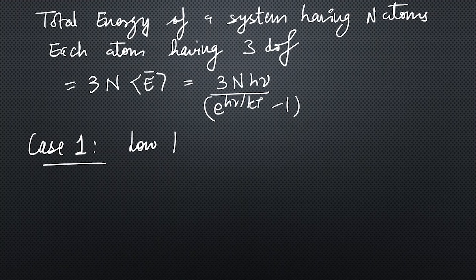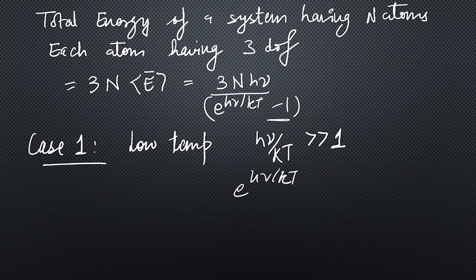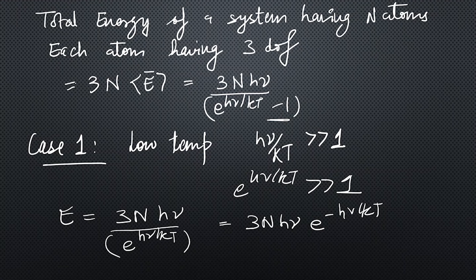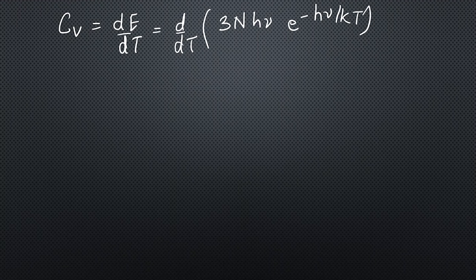Case one deals with the low temperature range. At low temperatures, the factor hμ/kT is very much greater than one, so the exponential term dominates and we can neglect the minus one in the denominator. The total energy then becomes approximately 3N·hμ · exp(−hμ/kT). To find Cᵥ we differentiate with respect to temperature.